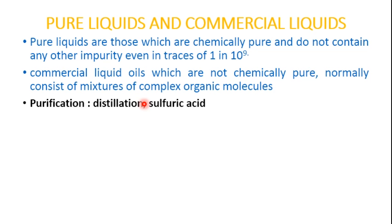Some purification can be done using distillation and sulfuric acid. The main impurities in liquid dielectrics are dust, moisture content, dissolved gases, and ionic impurities. Different methods used for purification include filtration, centrifuging, degassing and distillation, and chemical treatment. Water is removed by using drying agents, and sometimes sulfuric acid is used to remove wax and residues, followed by washing with caustic soda and distilled water.